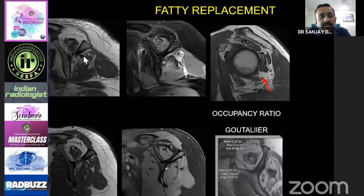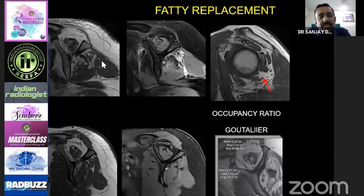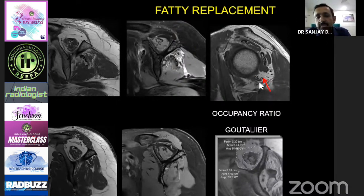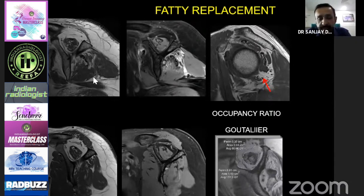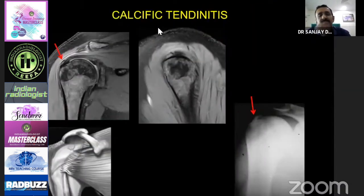Fatty replacement is the replacement of the supraspinous fossa or any muscle belly by bright signal on T1-weighted images. It is graded as: less than 25% is grade 1, 25 to 50% is grade 2, 50 to 75% is grade 3, and more than 75% is grade 4. Here you see the teres minor muscle is completely replaced — that is grade 4 fatty replacement. This is around grade 1 fatty replacement of supraspinatus, and this is grade 2 fatty replacement of infraspinatus.